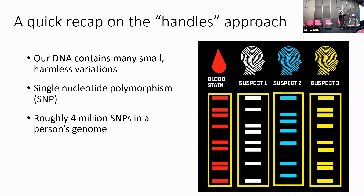If you've ever seen a crime show, they link DNA to a suspect by looking at SNPs. Pretend this is a gene — there's a variant. Suspect one has it, suspect two has it, suspect three has it. Move to the next set of SNPs: suspect one has it, suspect two doesn't — throw them out. Suspect three has that second SNP. Move on to the third: suspect one not a match — throw them out. Keep going for suspect three — it's a match. That's the idea of how SNPs can uniquely identify a sequence.